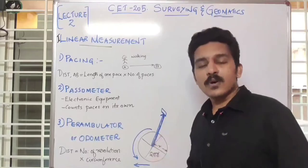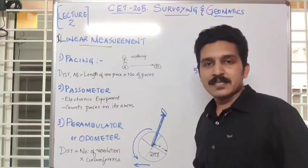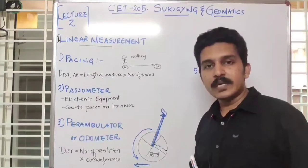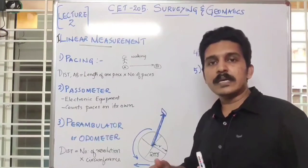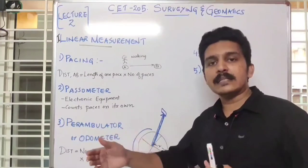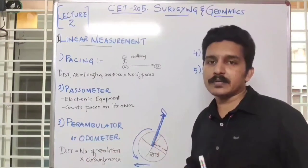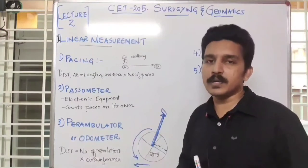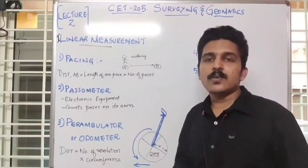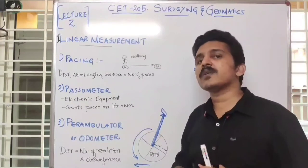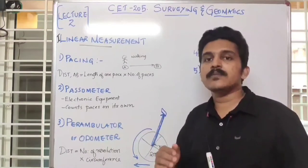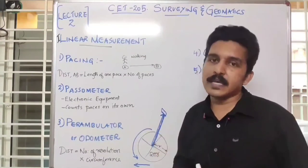Let us discuss what is linear measurement. In linear measurement, what we do is we measure the length between two points — that is, the horizontal measurement is what we do. Let us discuss what are the different methods employed based on the different instruments that we use.